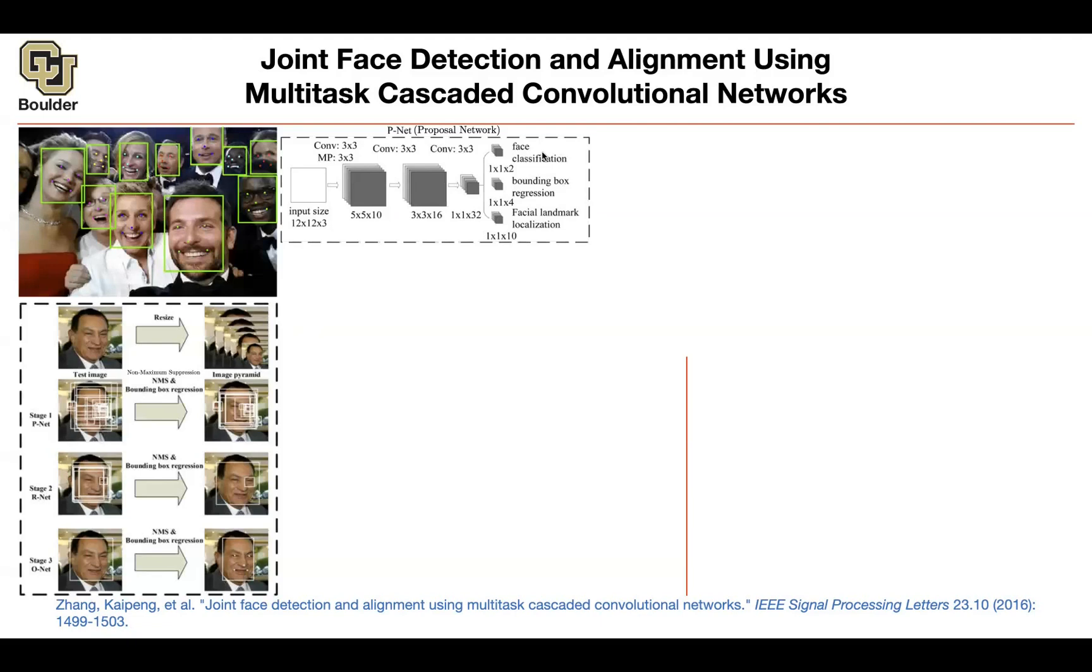This is a much simpler problem compared to detecting objects in general, which could have multiple classes. Here it's just either a face or no face—two classes, two outputs. Box regression adjusts the coordinates of the proposal. The landmark locations give you a 10-dimensional output Y10, because you're predicting the X and Y coordinates of five landmarks: the nose, left eye, right eye, and the mouth corners.